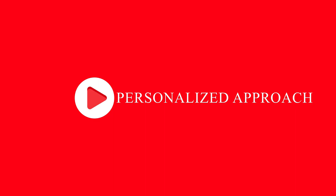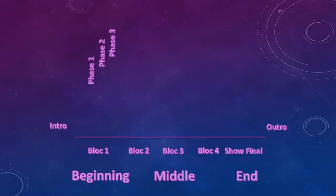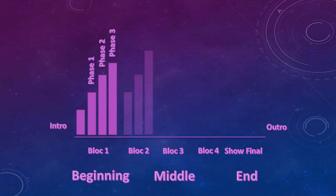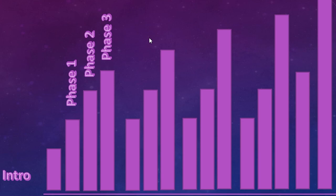In a personal approach, you have the same structure but phase one, phase two, and phase three have different energy levels. You respect: low energy in phase one, a little more energy in phase two, and high energy in phase three. You do the same thing for the second block, third block, fourth block, and the final show — and as you can see, phase three always goes a little bit higher across the blocks.